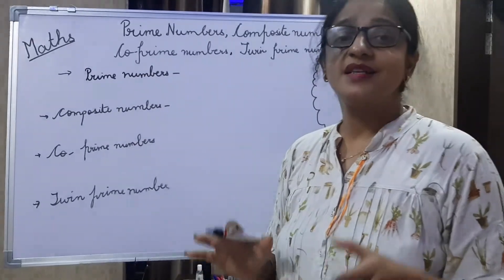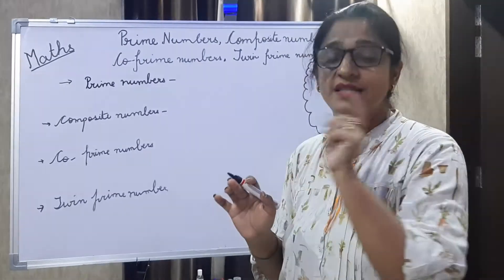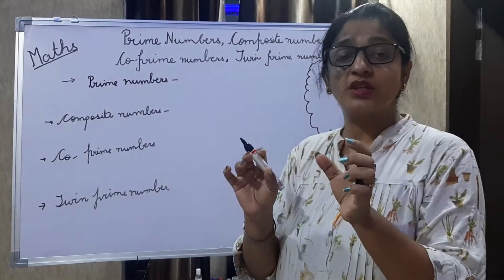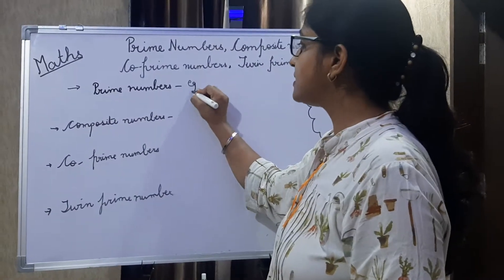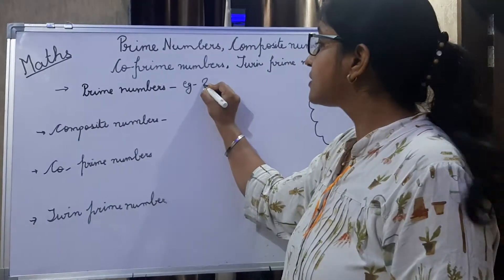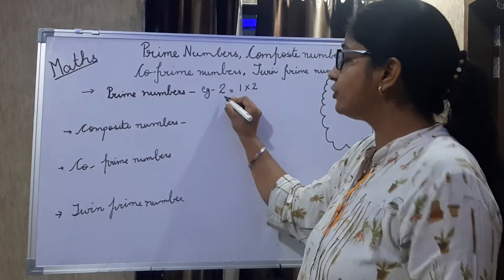Prime numbers are those numbers which have factors one and the number itself. For example, two has factors one and the number itself two.